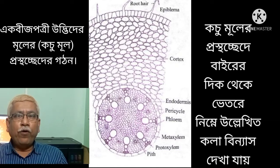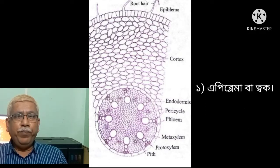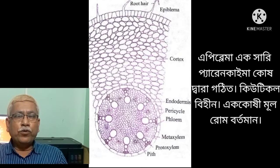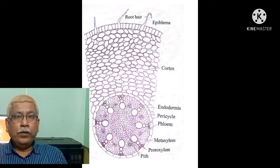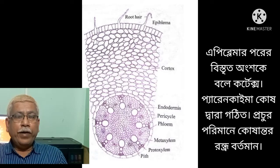The tissue arrangement from periphery to center is as follows. First, epiplema — look at this diagram, it is a single layer composed of parenchyma cells. Some epiplema cells give rise to unicellular root hair. Cuticle is absent. Next to epiplema there is cortex.